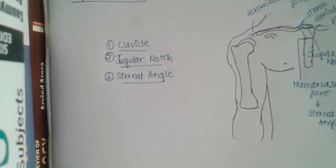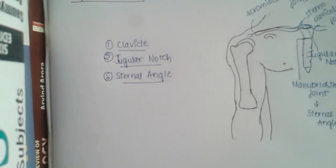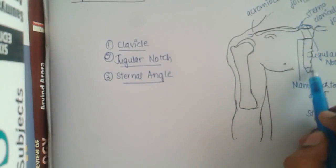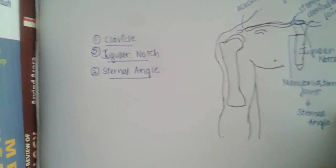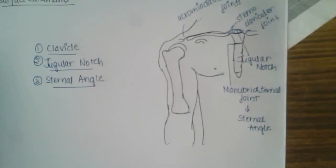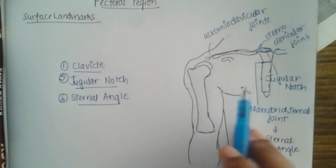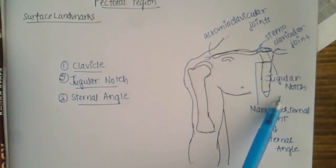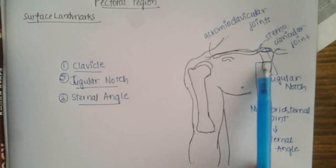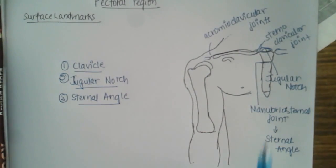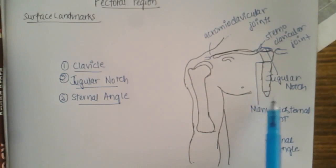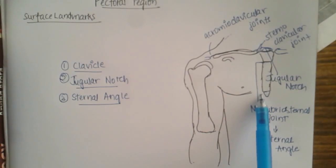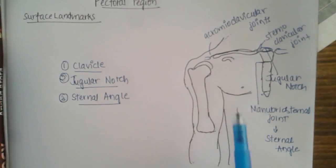The fourth landmark is the epigastric fossa, which is located at the infrasternal angle near the xiphoid process. The sternum has three parts: the manubrium, the body of the sternum, and the xiphoid process. Just above the xiphoid process is the epigastric fossa — it is also called the pit of the stomach.